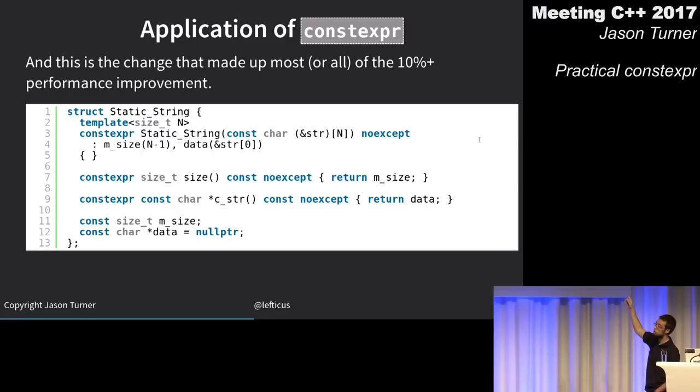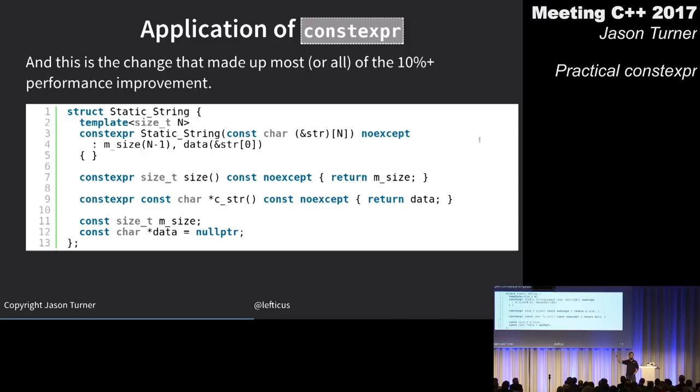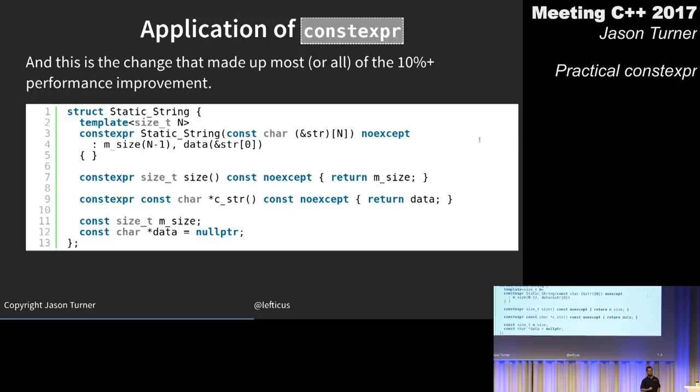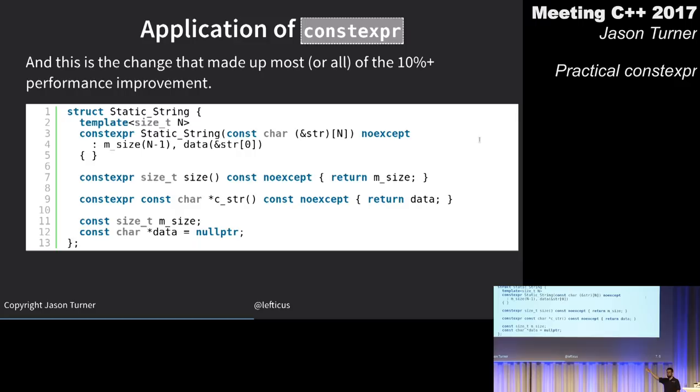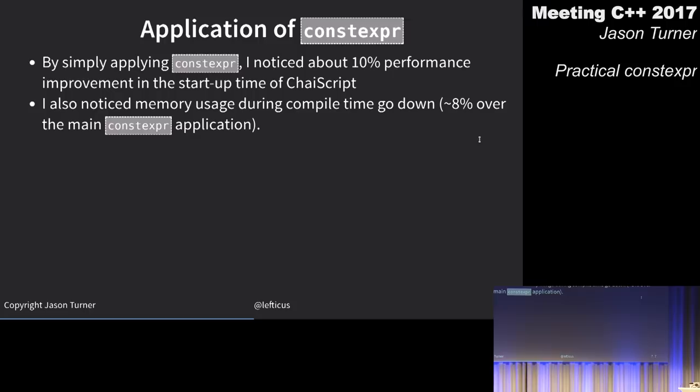I also noticed memory usage during compile time actually went down by 8% when I applied constexpr across everything. I'm not a compiler writer so I don't have an explanation, but I was able to measure it multiple times and it seemed pretty conclusive.